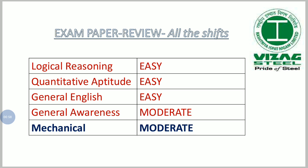In quantitative aptitude, questions covered all topics. Most questions were relatively easy but time-consuming. In general English, questions were also easy — focusing on word meanings, synonyms, antonyms, and pair-up type questions.